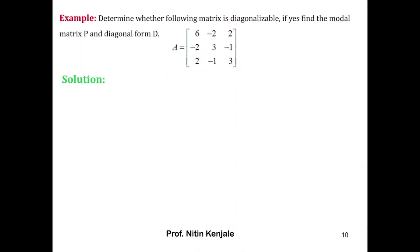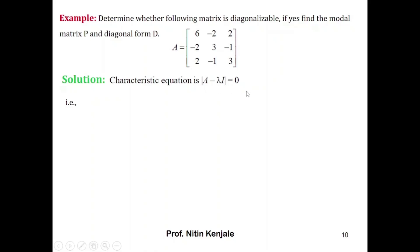Now let us see a real example. The question is: determine whether the following matrix is diagonalizable; if yes, find the modal matrix P and the corresponding diagonal form D. First we find eigenvalues by solving the characteristic equation, det(A minus λI) equals 0. The characteristic equation works out to λ³ minus 12λ² plus 36λ minus 32 equals 0.